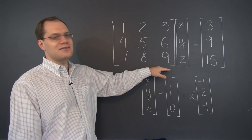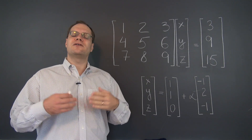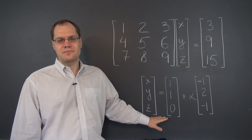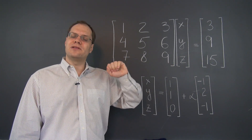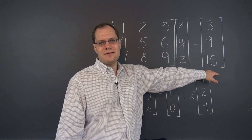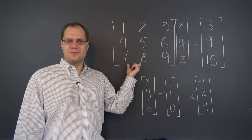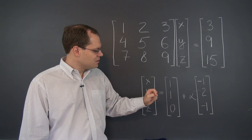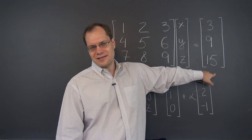Now consider this linear system as before. Based on our experience and insight, we would have come up with this solution. This is the general solution for this system — with a little bit of experience, it can be determined by noticing that the right-hand side is the sum of the first two columns, which produces this vector, saying we need one of the first column, one of the second column, and none of the third to produce the vector on the right-hand side.